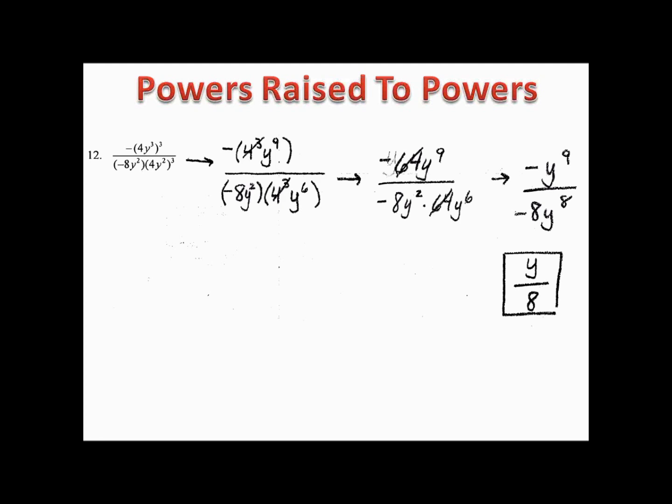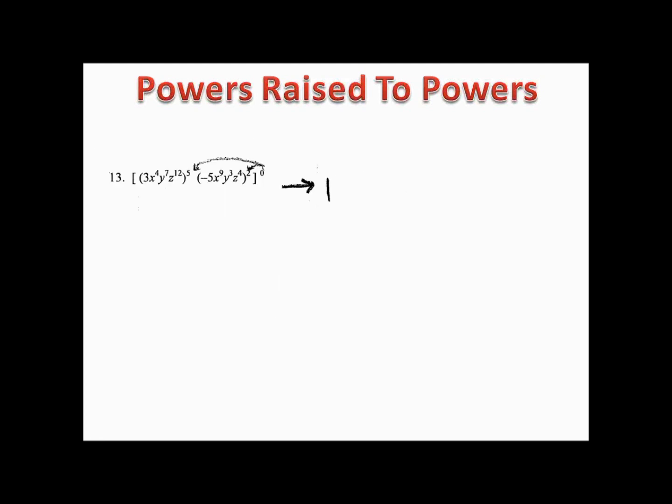My favorite example is number 13. Notice we have all these exponents inside brackets, but outside the brackets is a zero — meaning everything inside is raised to the zero power. And anything to the zero power is simply 1, so this complicated-looking expression is just 1. When dealing with exponents raised to a power, simply multiply all the powers inside by the outside exponent — that's everything you need to know.